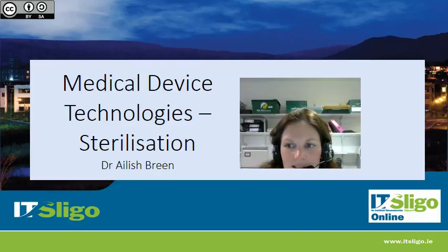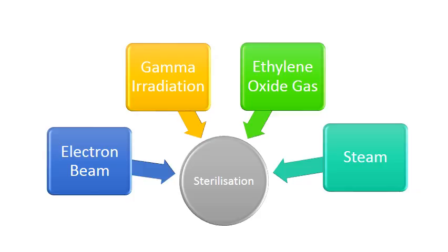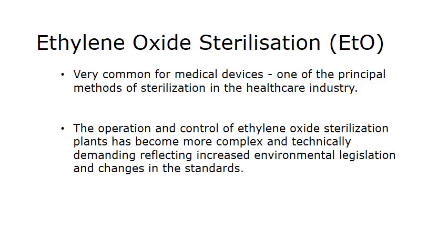Hello again. I'm going to continue the topic of sterilization in the next few slides, so we'll have a look at the schematic again. When we talk about the different sterilization methods, I've covered electron beam already, and in the next few slides we're going to look at ethylene oxide gas sterilization. Ethylene oxide is very common for medical devices.